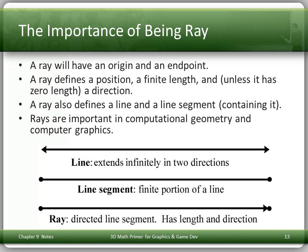A ray also defines a line and a line segment — the line containing it, and the line segment containing it. Rays are important in computational geometry and computer graphics, which is why I'm talking about them. So a line extends infinitely in two directions, denoted with two arrowheads. A line segment is a finite portion, denoted with two dots at the ends. A ray, for us, is a directed line segment — it starts here and ends there, but it has a direction.